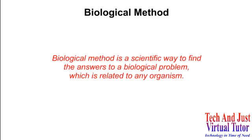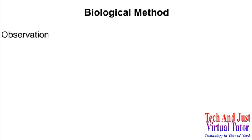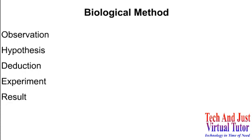Biological method is a scientific way to find the answer to a biological problem which is related to any organism. The steps used in the system of biological method are observation, hypothesis, deduction, experiment, result, and theory.